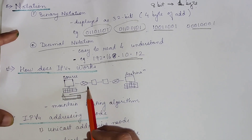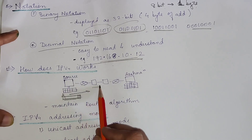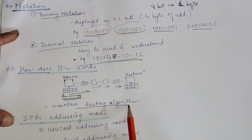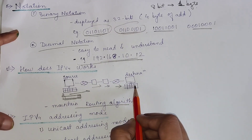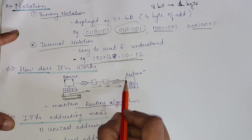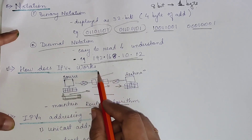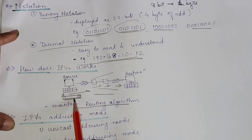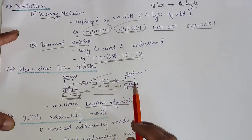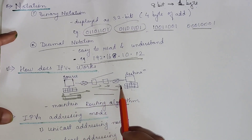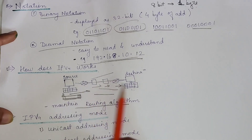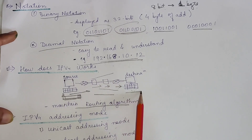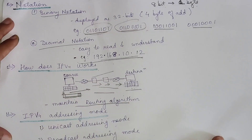Routers on the Internet use these addresses for forwarding the data toward the destination. Routers maintain IP addresses and use routing algorithms to find the best path for sending data to the respective destination. Just as we find the shortest path when travelling, routers also find the best path with no congestion or traffic, and send the data accordingly. This is how IPv4 works.